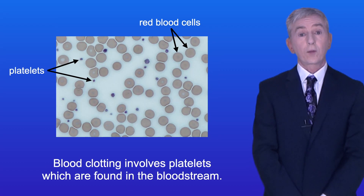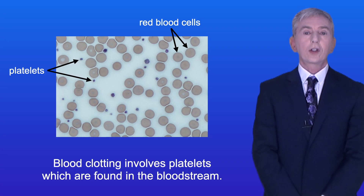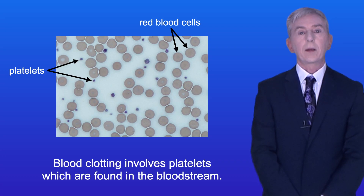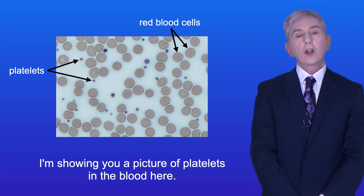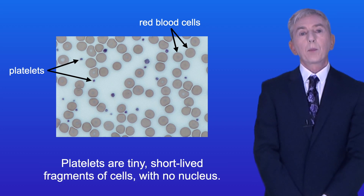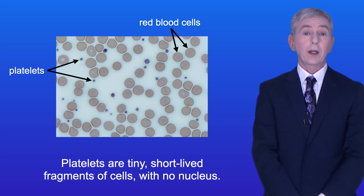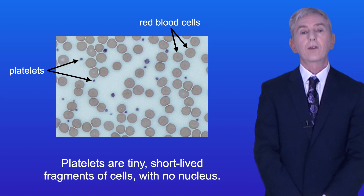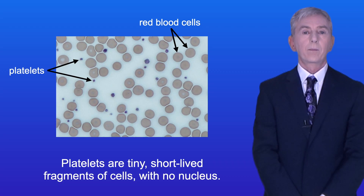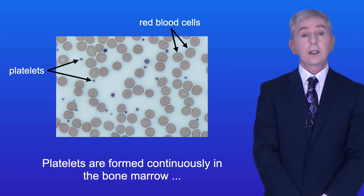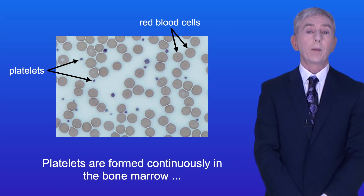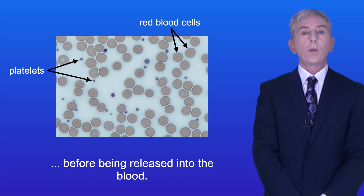Blood clotting involves platelets which are found in the bloodstream, and I'm showing you a picture of platelets in the blood here. Platelets are tiny short-lived fragments of cells with no nucleus, and platelets are formed continuously in the bone marrow before being released into the blood.